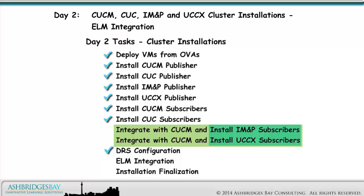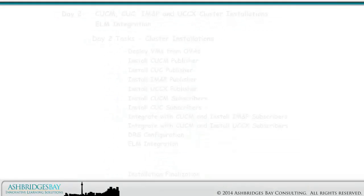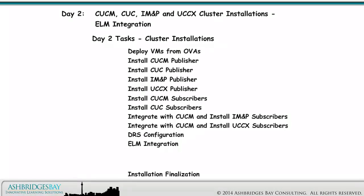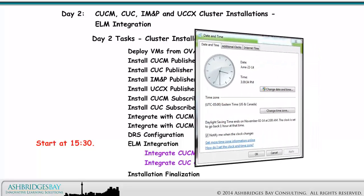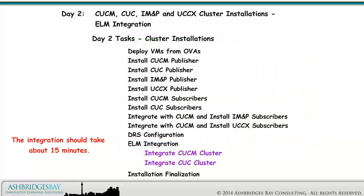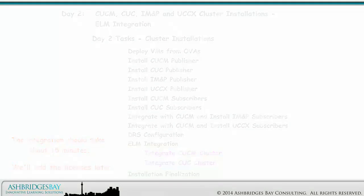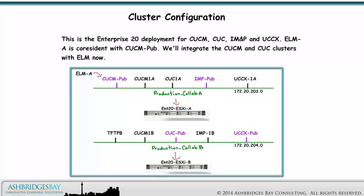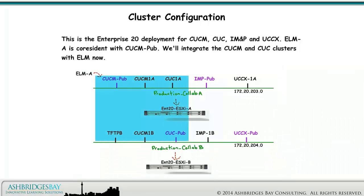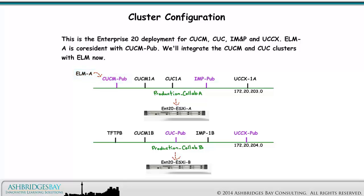Configure DRS for all four applications. Integrate CUCM and CUC with ELM. Do some final tasks, like upgrade VMware tools and configure virtual machine startup and shutdown. All the clusters have DRS configured. Start the ELM integration at 15:30 — completing the integration should take about 15 minutes. We'll add the licenses later. This is the Enterprise 20 deployment for CUCM, CUC, IM&P, and UCCX. ELM A is co-resident with CUCM Pub. We'll integrate the CUCM and CUC clusters with ELM now.